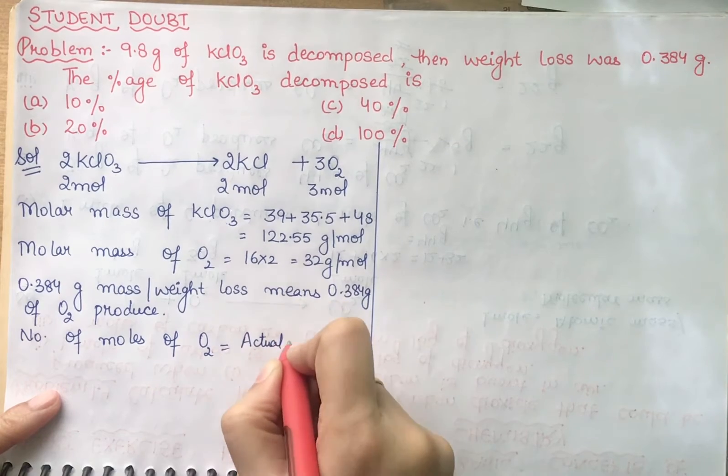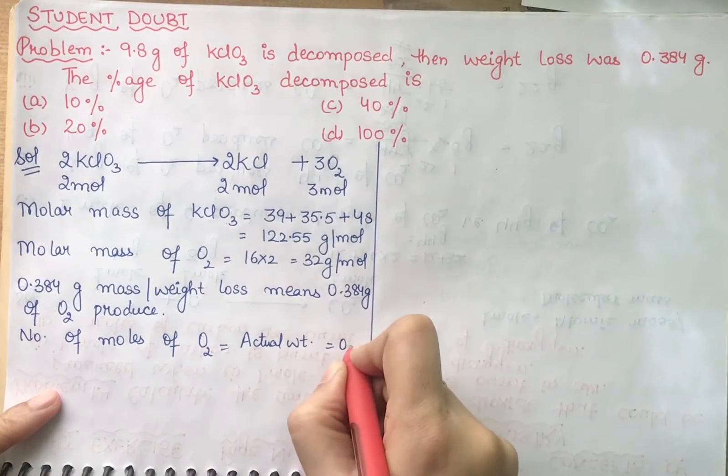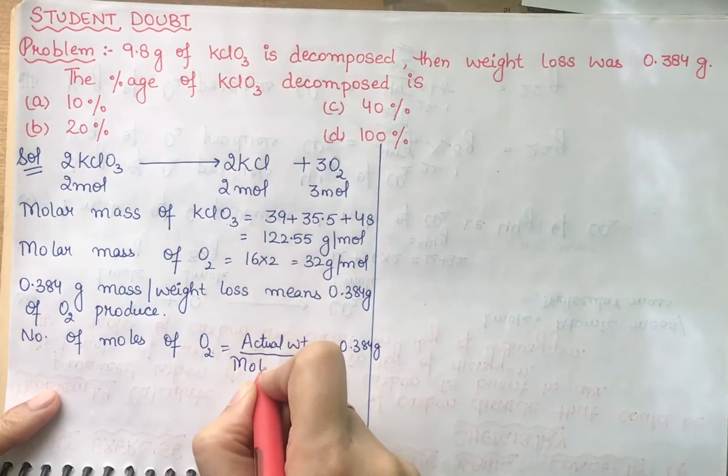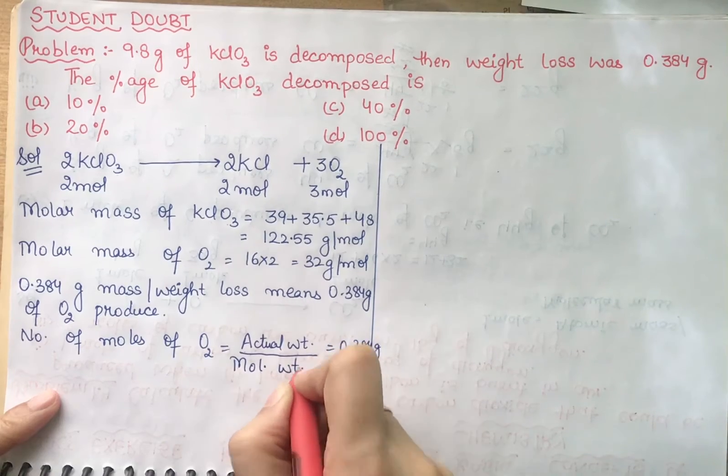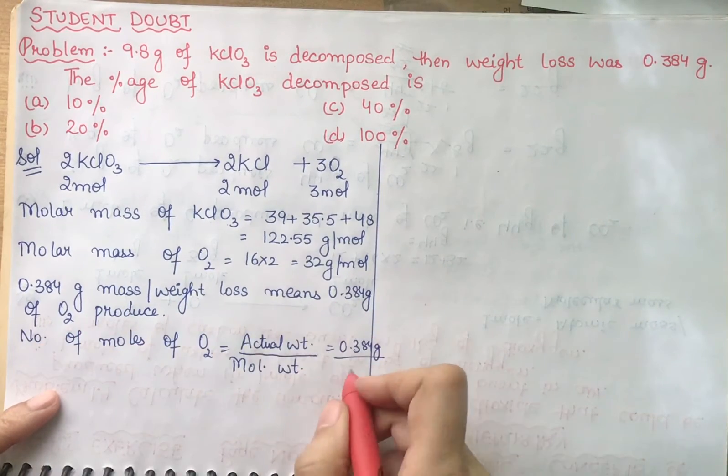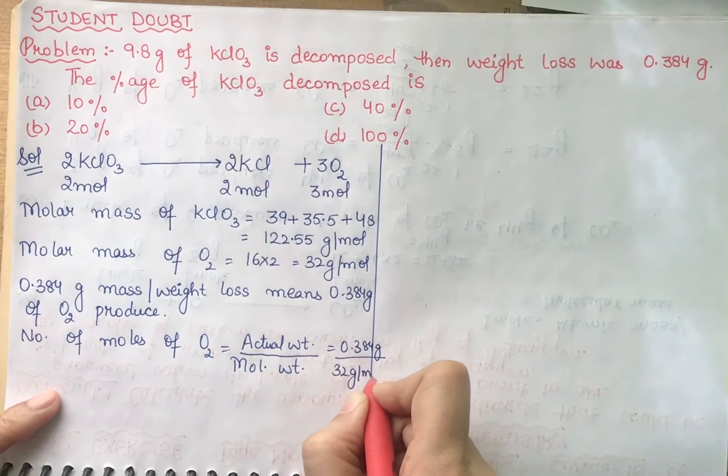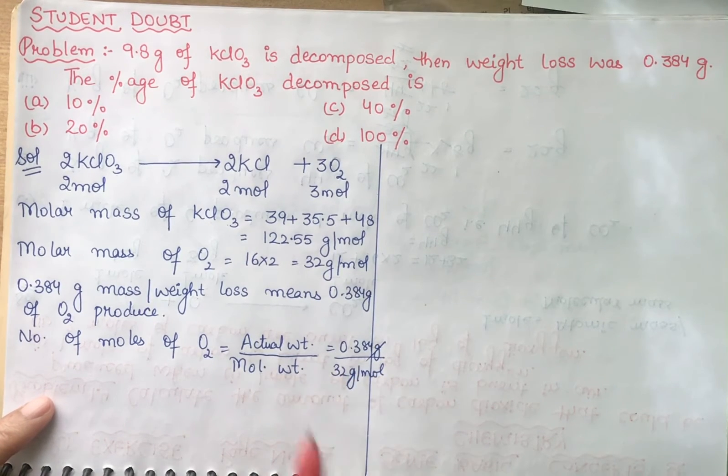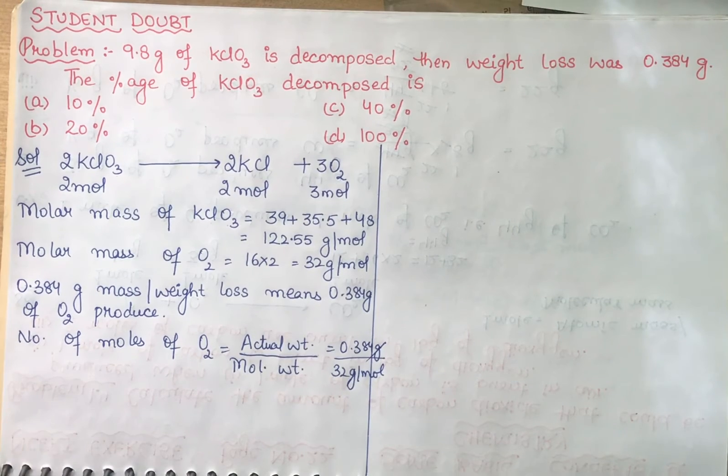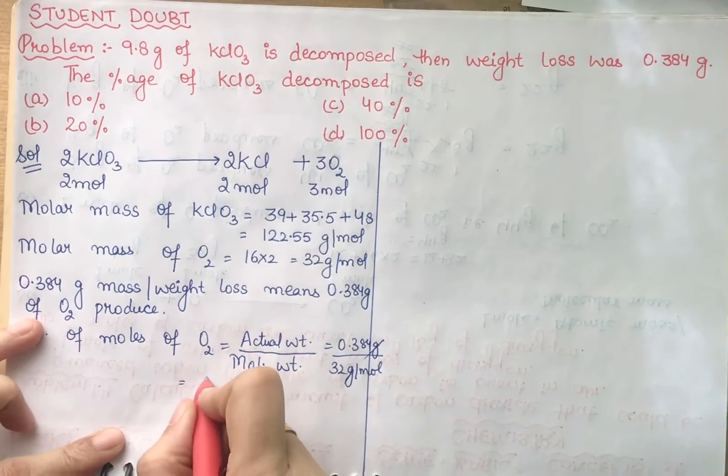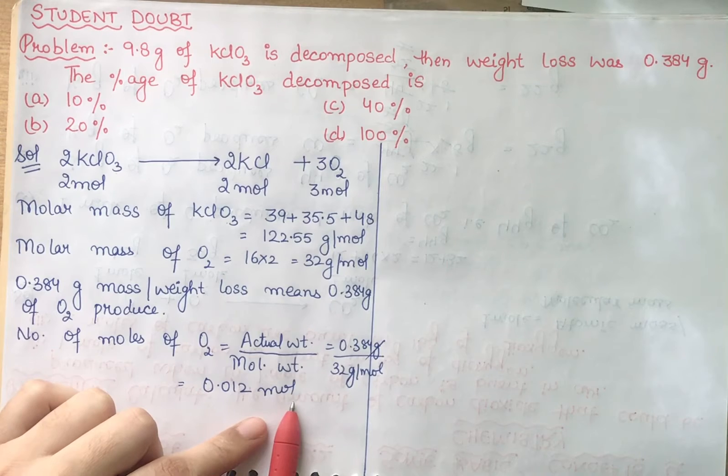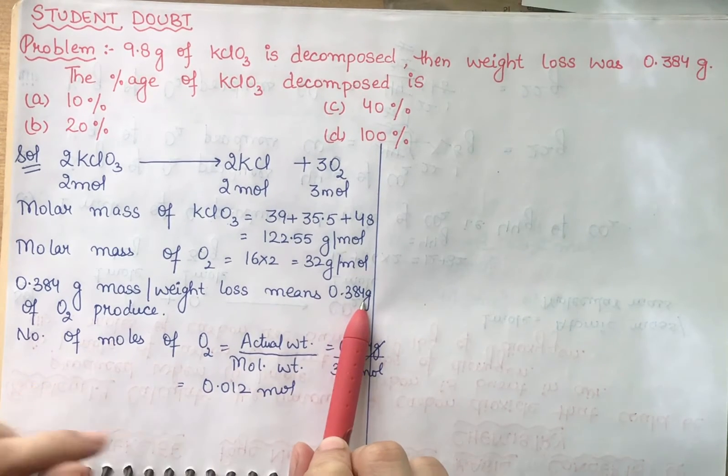How much is the actual weight given? That is 0.384 gram divided by molecular weight of oxygen. So how much is the molecular weight? Molecular weight equals 32 grams per mole. With gram, you have cancelled your gram. So when you divided 0.384 by 32, you get the answer 0.012 mole. That's the amount of oxygen produced if there is so much weight loss.